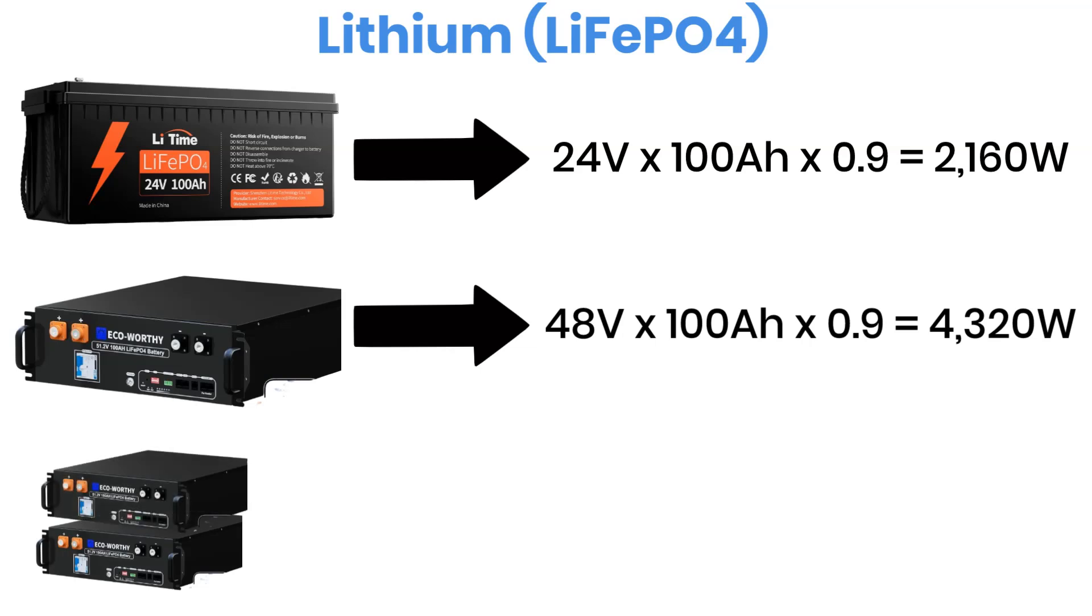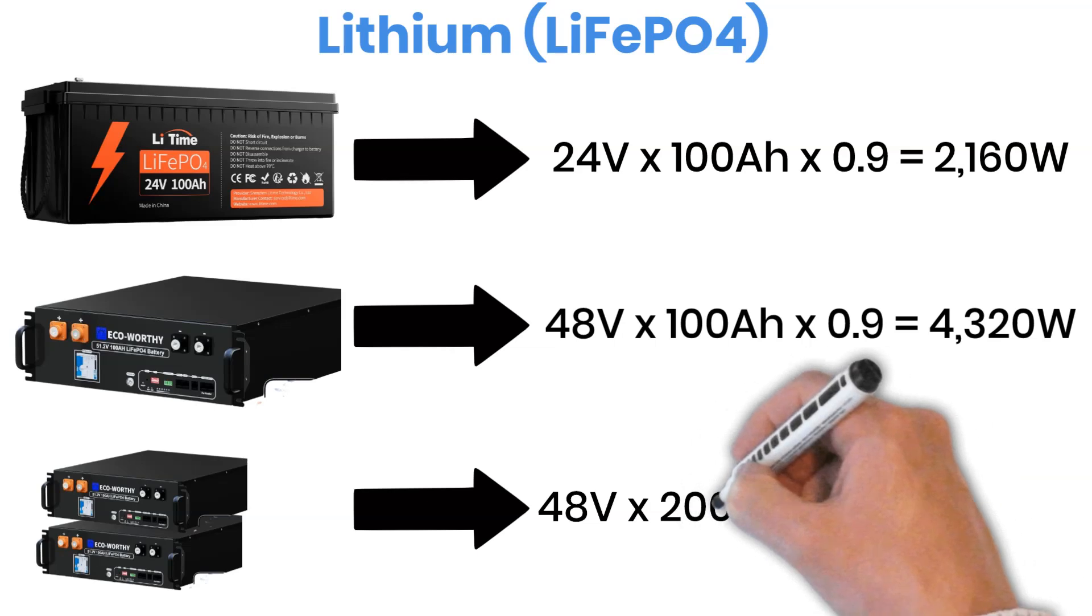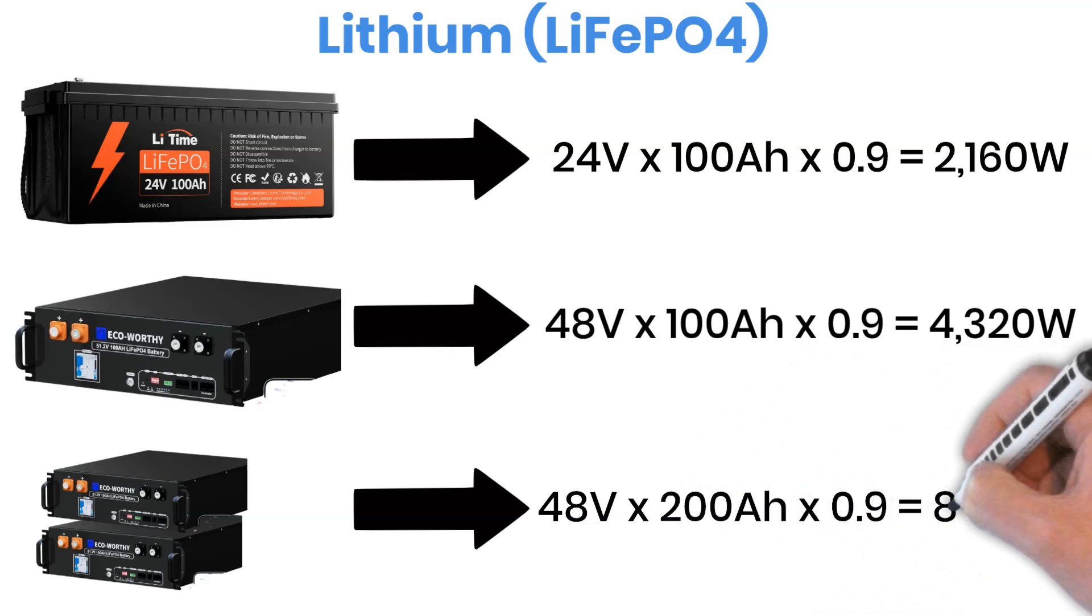Now, if you connect two 48 volt 100 amp hour batteries together, forming a 48 volt 200 amp hour bank, you can handle up to around 8,000 watts.